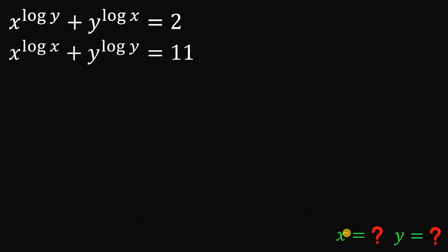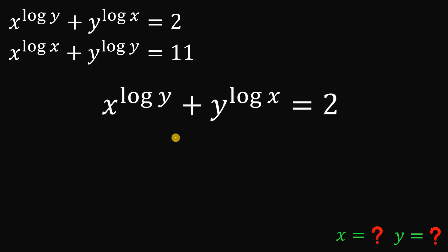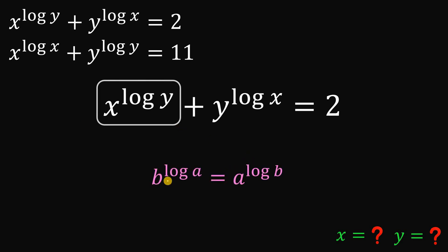Alright, so given these two equations, the goal is to find the values of x and y that satisfy them. To answer this, let's get the first equation and focus on the first term — x raised to the power of logarithm of y — because in this video we will show you the proof that b raised to the power of logarithm of a is equal to a raised to the power of logarithm of b.